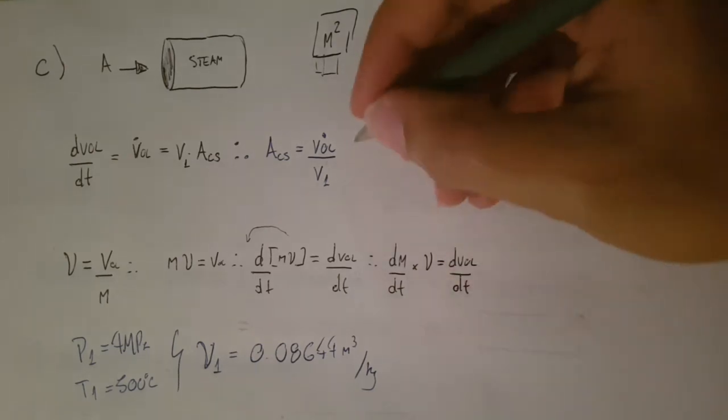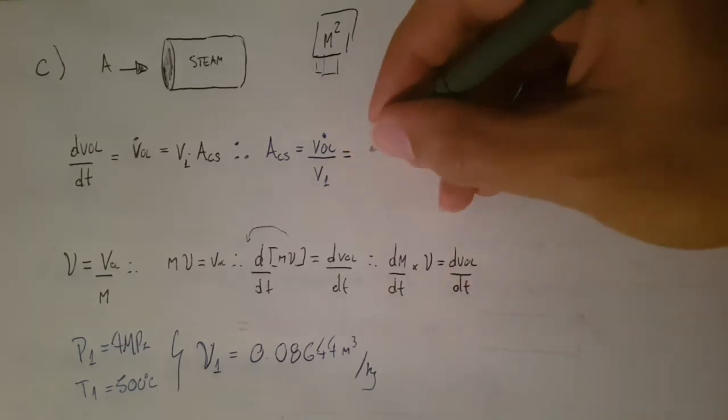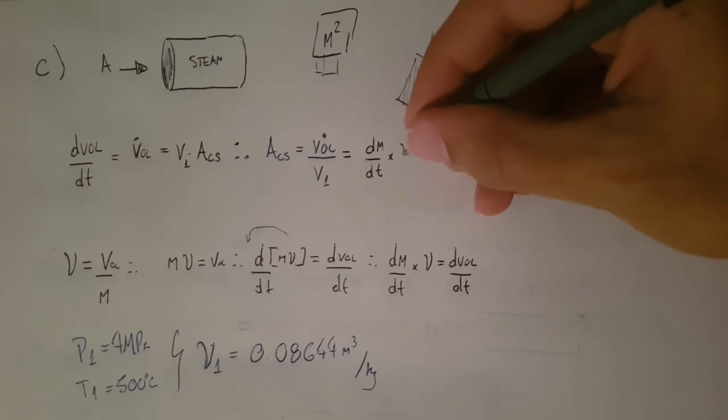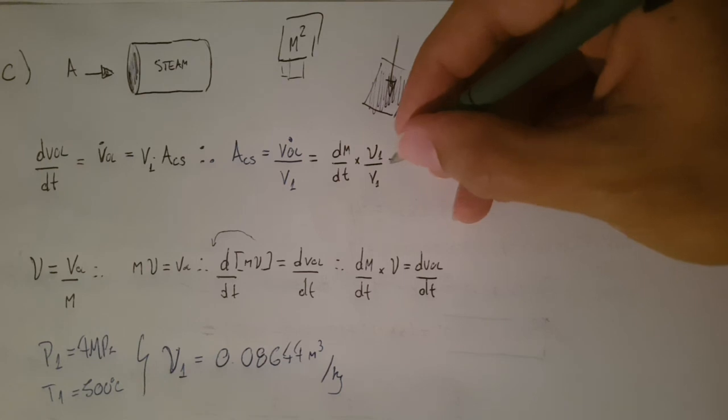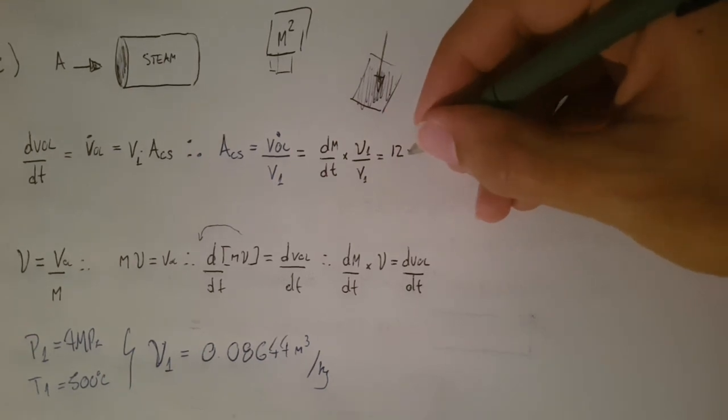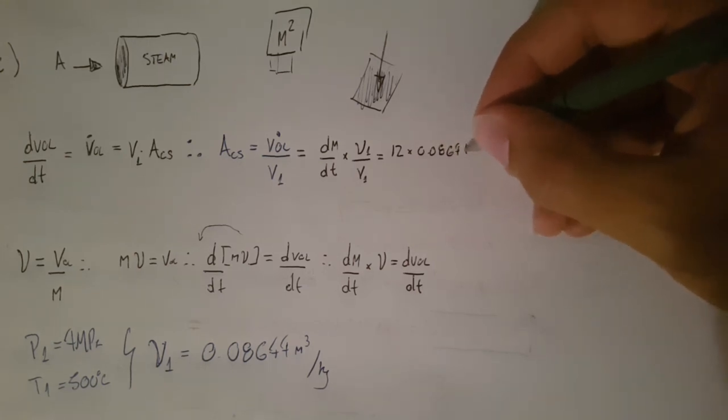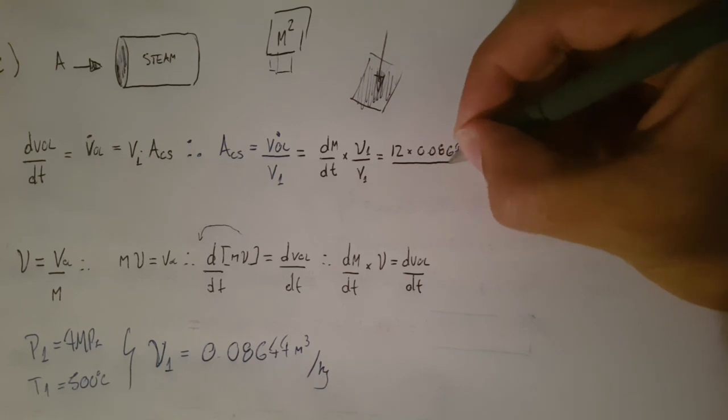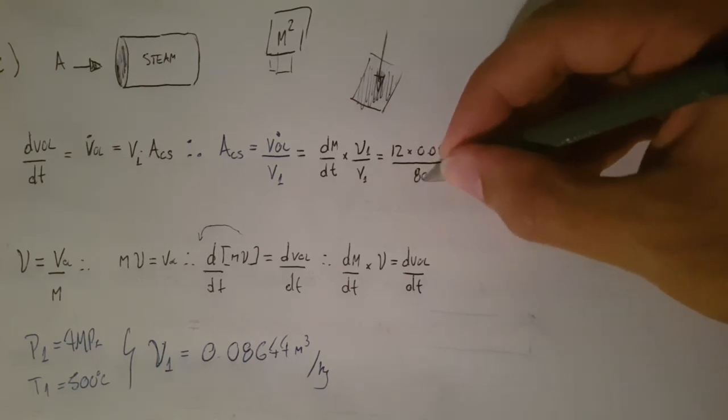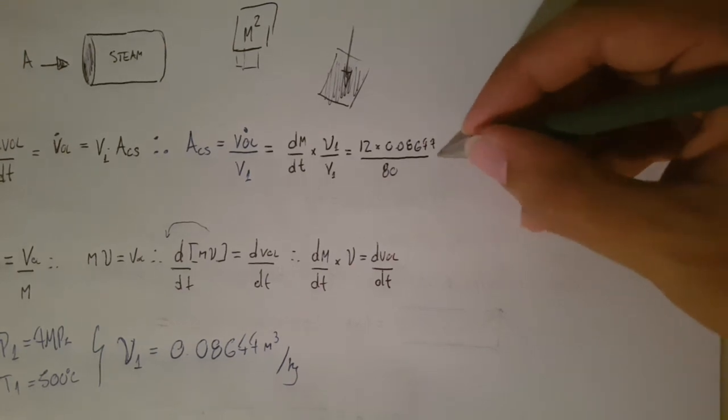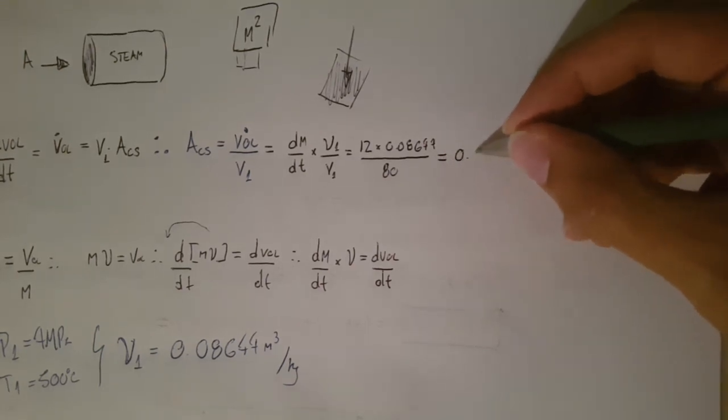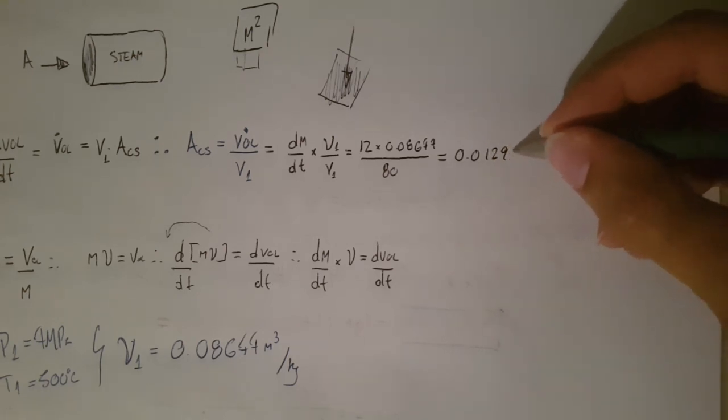So, we can put this guy here. This is going to be mass flow rate times specific volume 1 divided by velocity 1. Which is 12 times 0.08644 divided by, that's my initial velocity, 80.